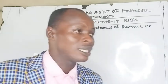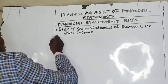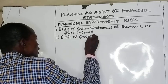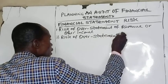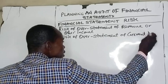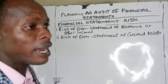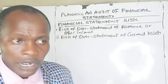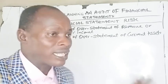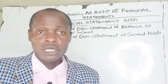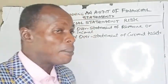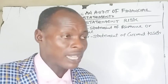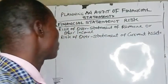Number two, we have risk of overstatement of current assets. Where sufficient allowances are not made for doubtful debts, the receivable figure in the financial statement will be overstated — and so also the profit. Failure to make allowances for doubtful debts means both the profit and the receivables in the financial statement will be overstated, which poses a significant threat.